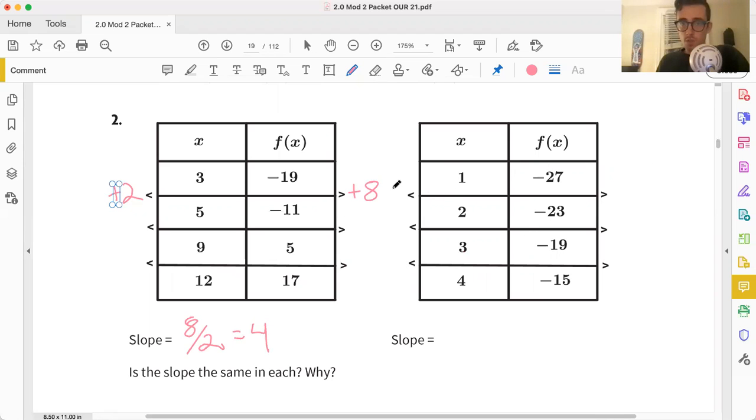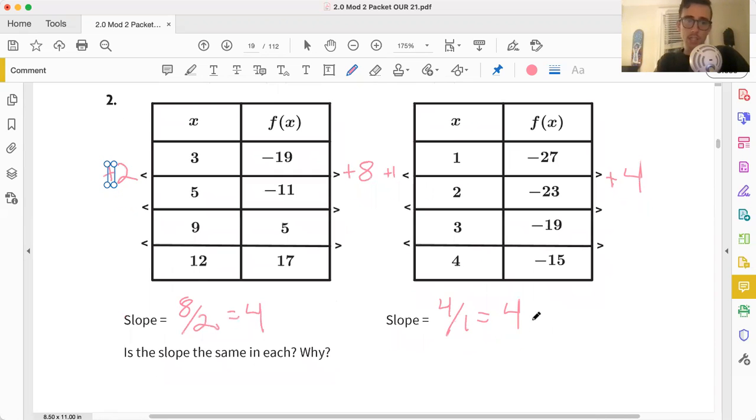Over here from 1 to 2, that's just adding 1. Negative 27 to negative 23, what's that doing? It's just adding back 4. 4 over 1 is the tick tock superstar 4. Is the slope the same in each? Yeah. 4 equals 4, last I checked.